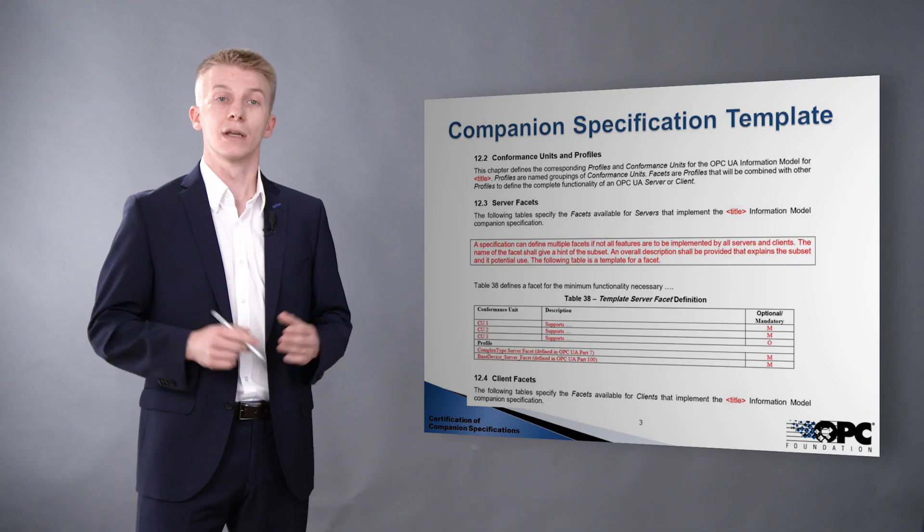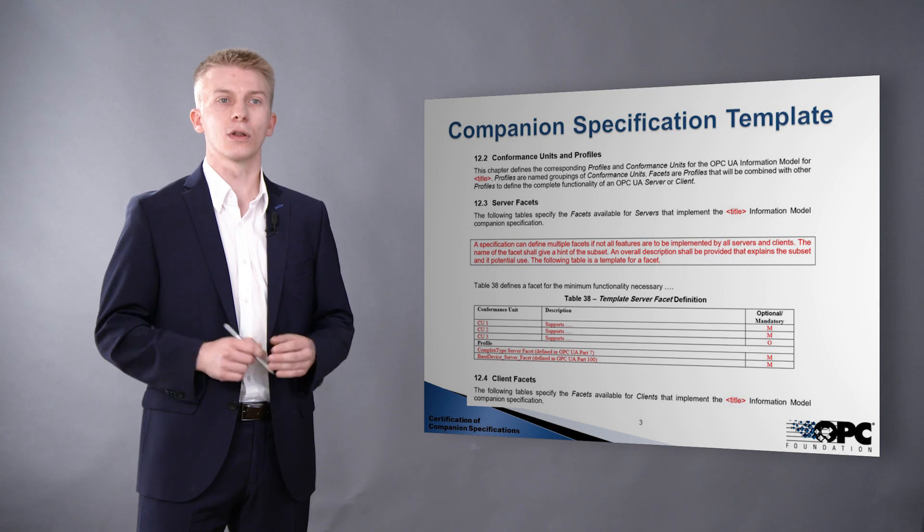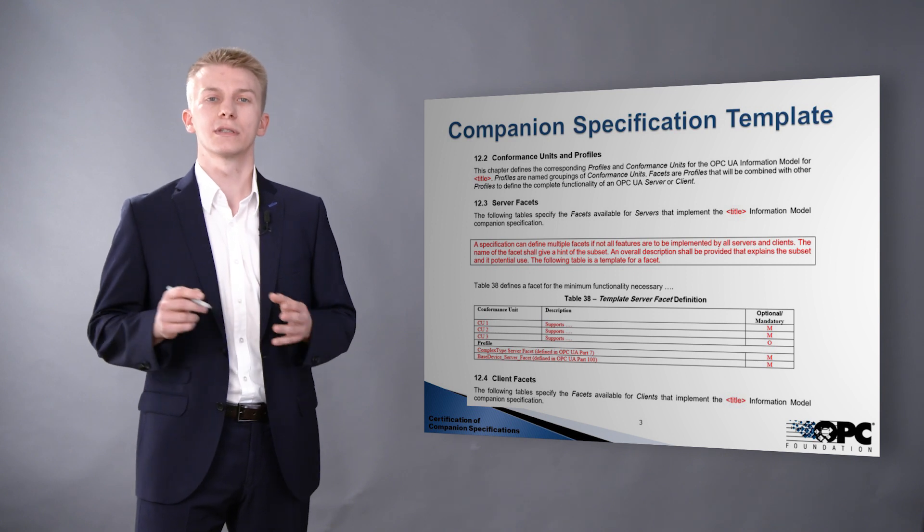Let's start with the companion specification template, because that's the first thing you're going to see. In that companion specification template you'll find a section called conformance units and profiles. In that section you need to break down your companion specification into smaller items, into smaller units — those are called profiles.